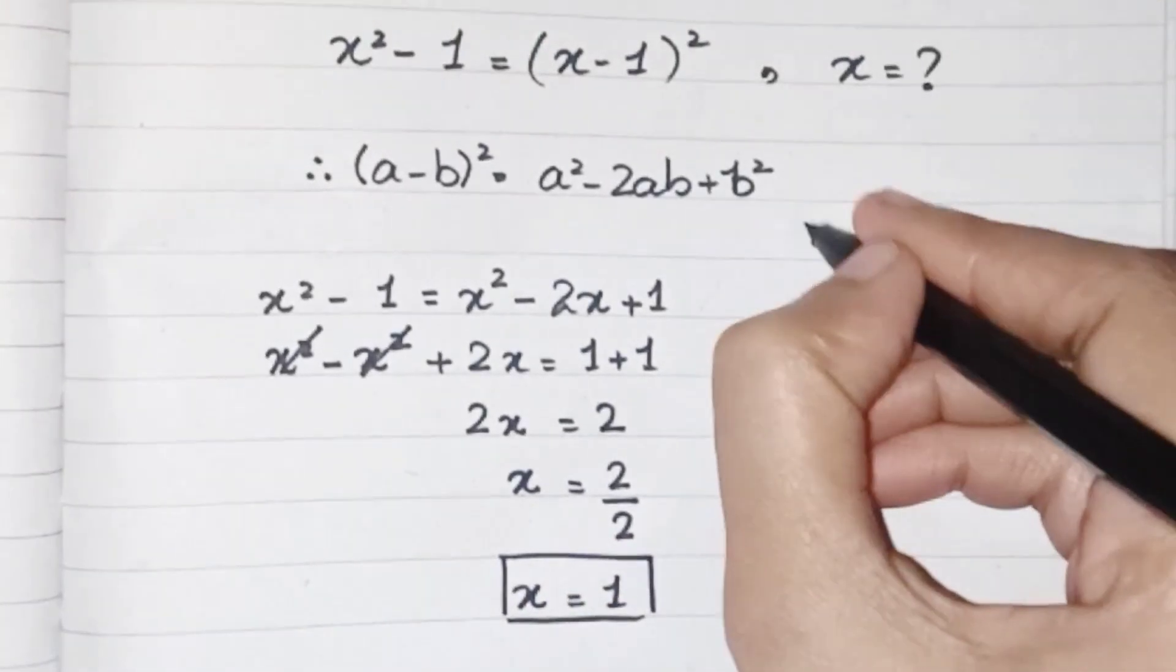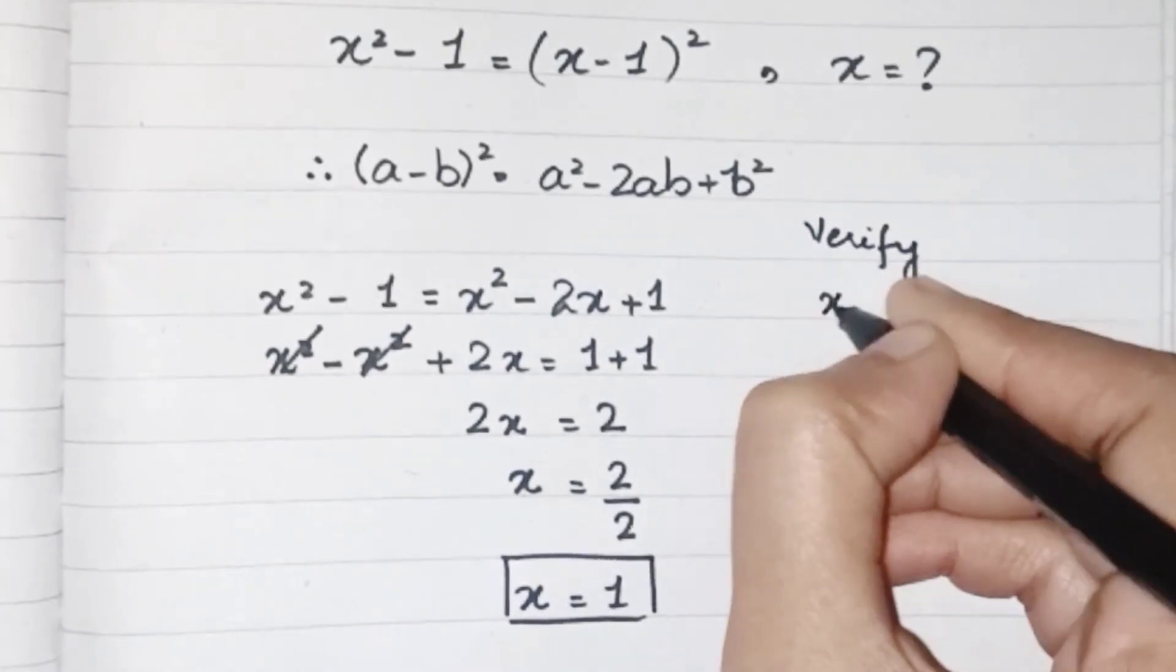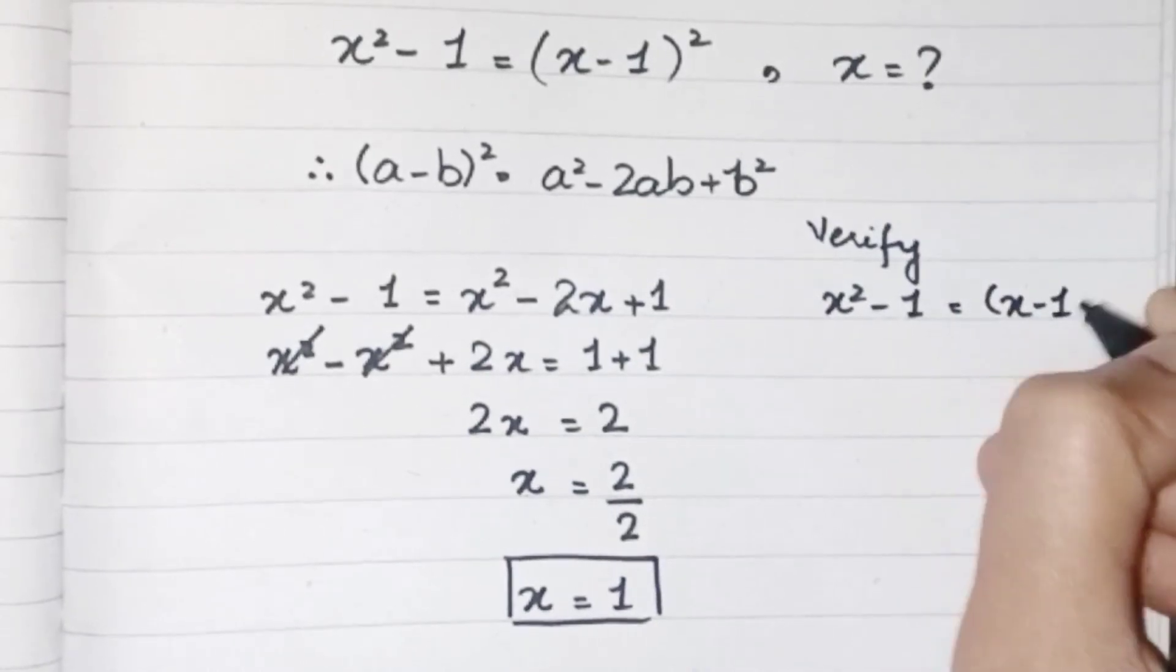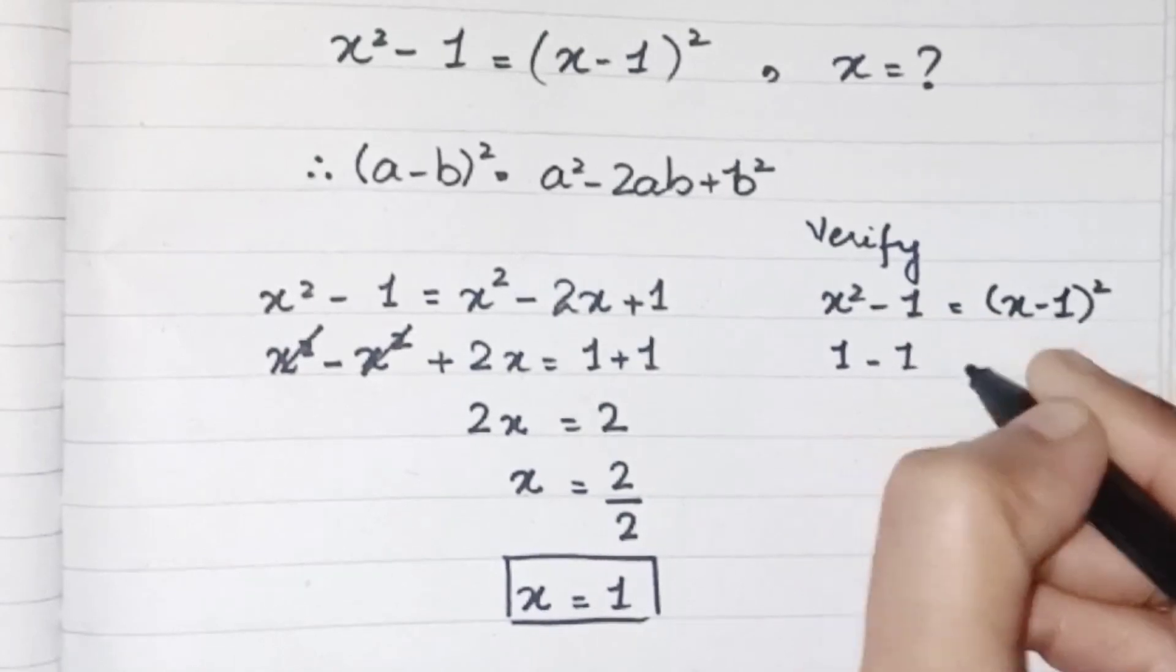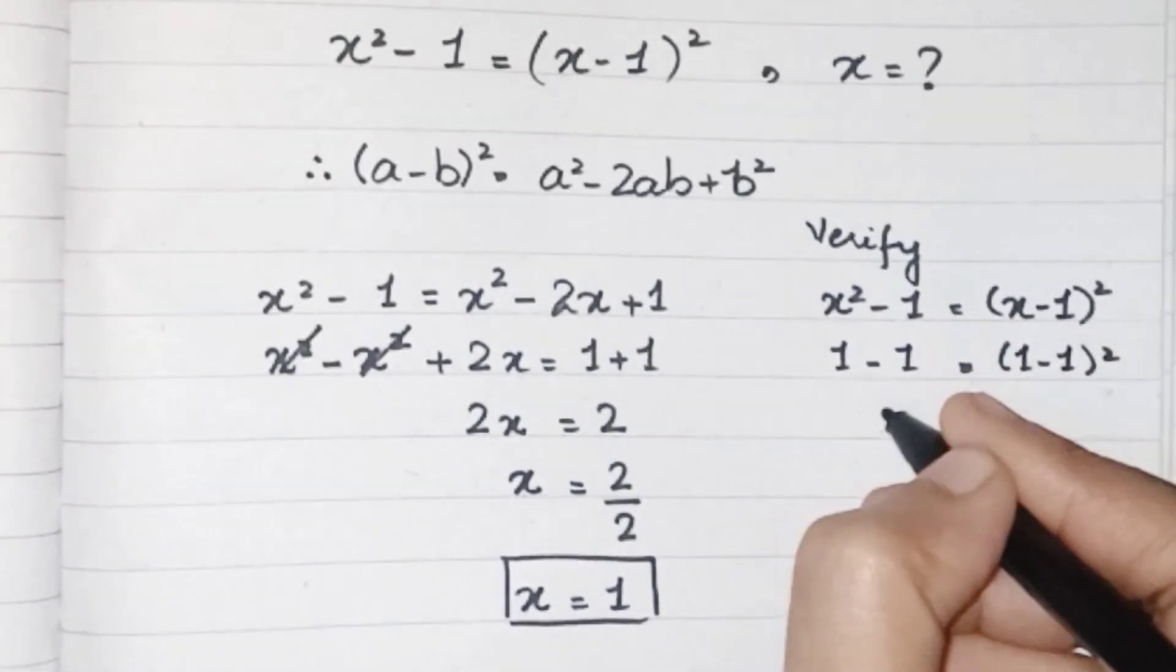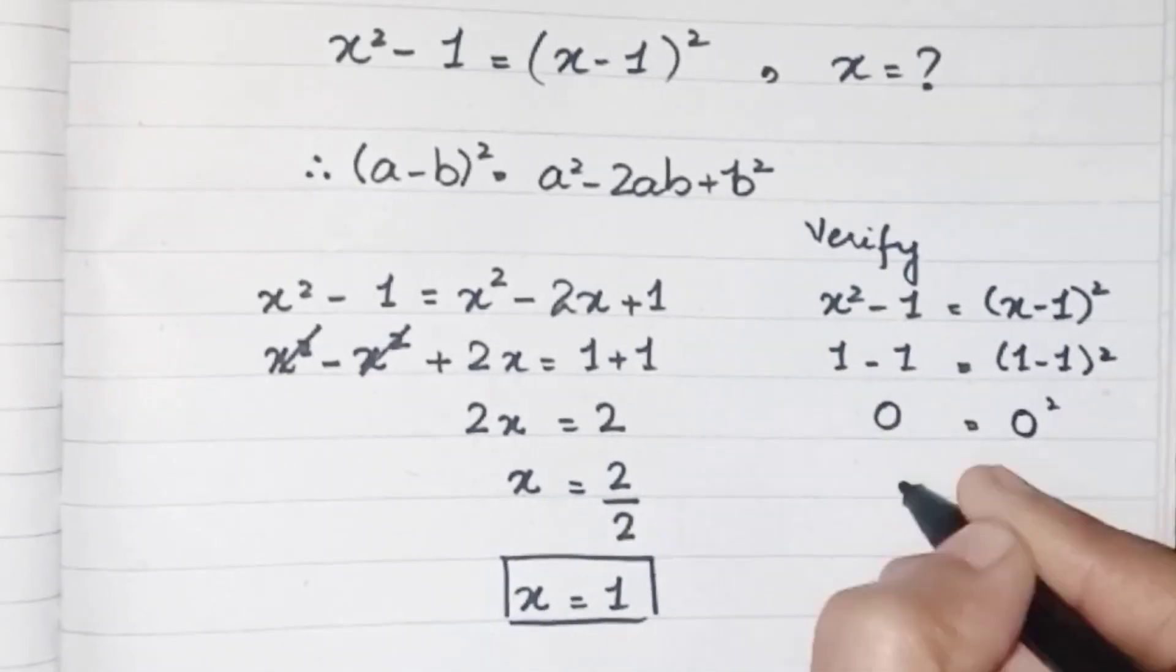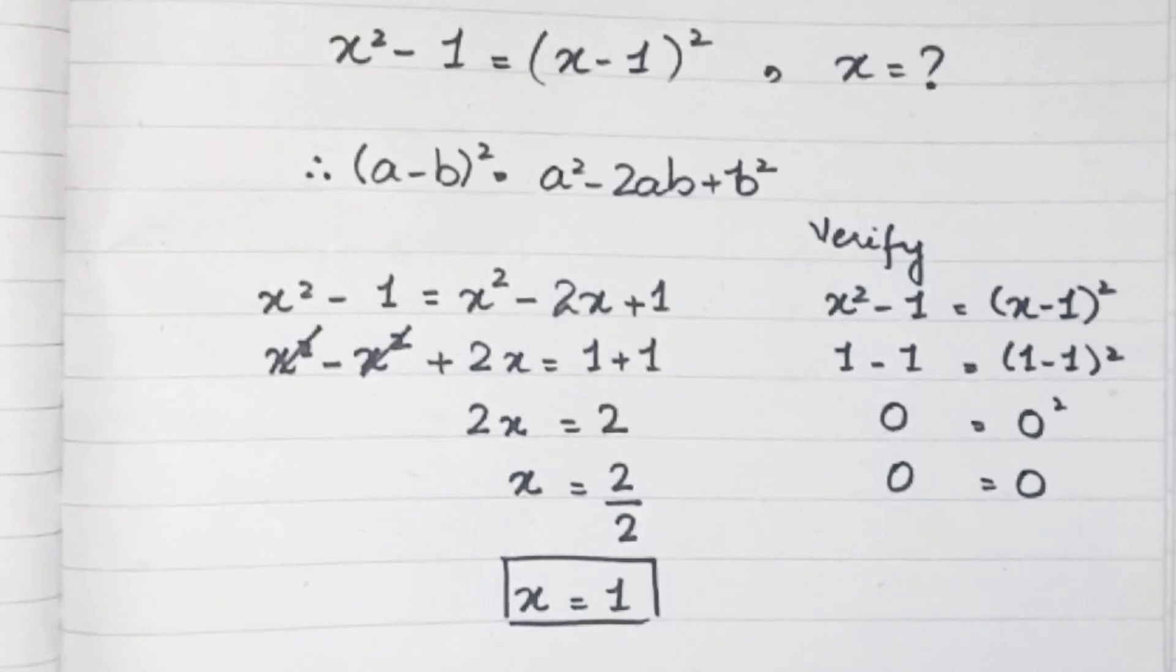If we verify our answer by putting this value into the original equation, you can see that the equation is already balanced. The square of 1 is 1, and if we put it like that, 1 - 1 equals 0, 1 - 1 equals 0, and the square of 0 is 0, which shows that our equation is verified and this answer justifies the equation.